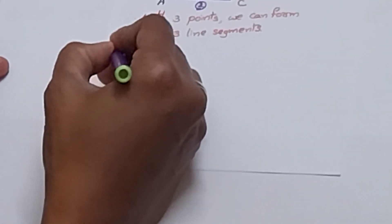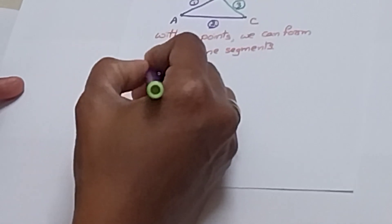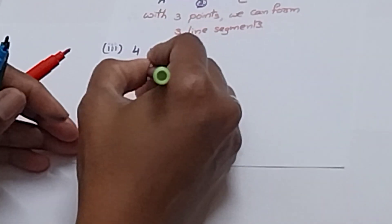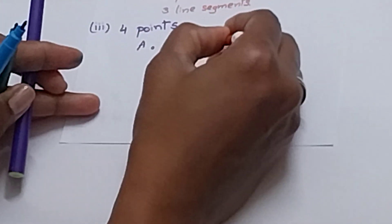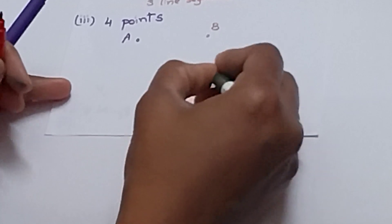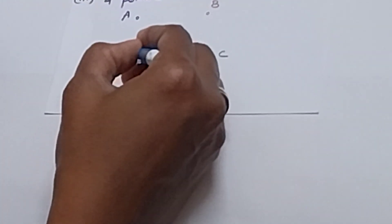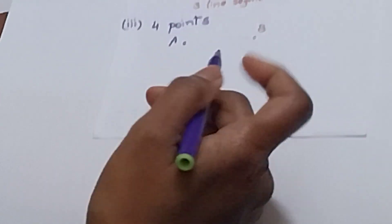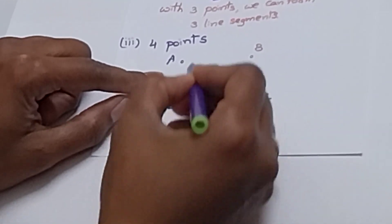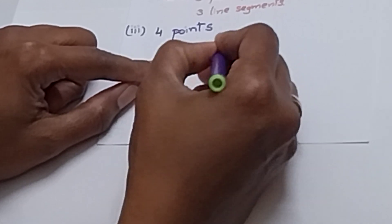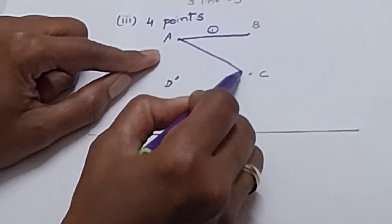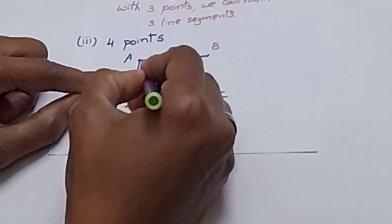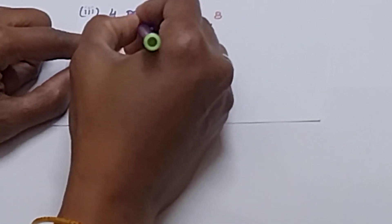Now we do the 3rd problem: 4 points. We take 4 points — A, B, C, and D. With A, we try to connect all remaining points. A to B: one line segment. A to C: second. A to D: third line segment. We connected A in all possible ways, so A is completed.